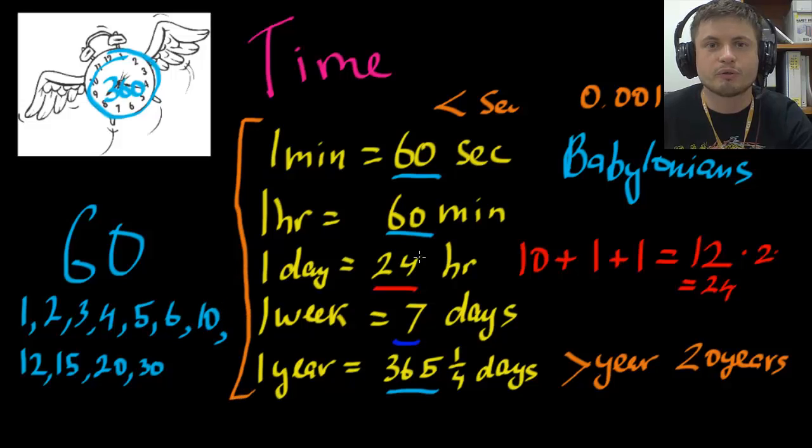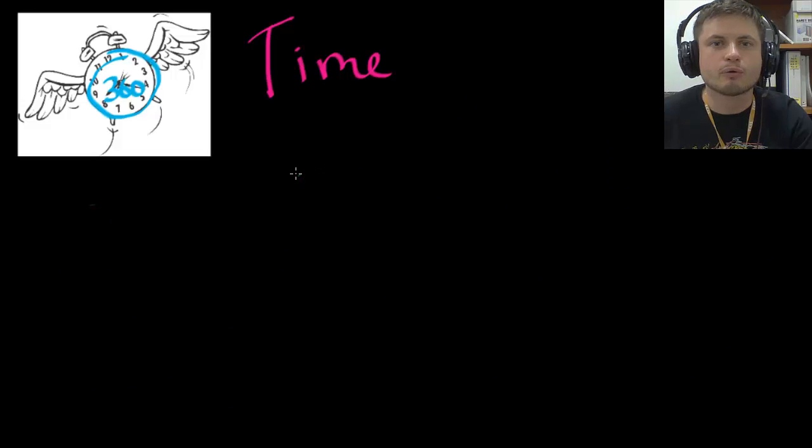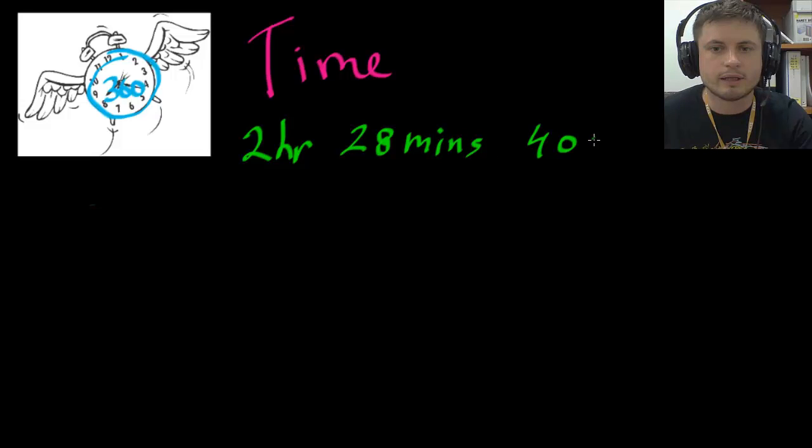But everything in between has to be measured in this ancient way, which might create a problem for you on a test when you're doing an IB test because you sometimes have to convert things. So let's try one of these conversions together actually. So let's try to convert hours into seconds because sometimes you have to do this because seconds are the standard unit. You have to measure things in seconds. So we're going to convert a few hours. Let's just say 2 hours, 28 minutes and 40 seconds into standard unit of seconds.